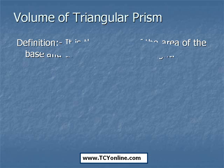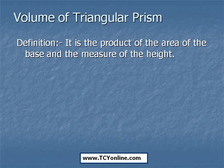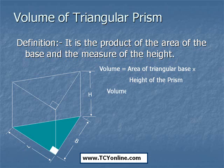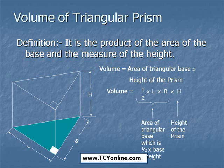Next we have the triangular prism. The volume of a triangular prism is basically the product of the area of the base and the measure of the height. The base is triangular in shape, so the area of the base is simply 1/2 × l × b, while the height of the triangular prism is h. So the volume of a triangular prism is 1/2 × l × b × h.